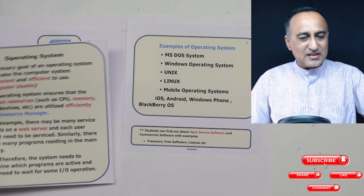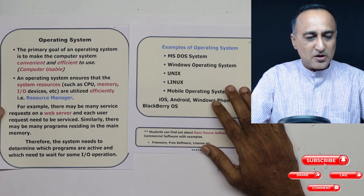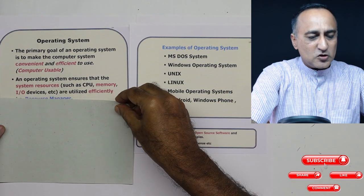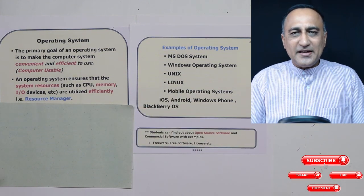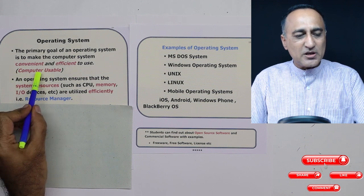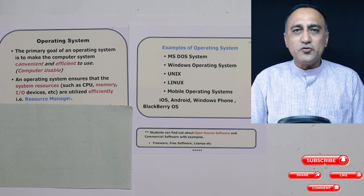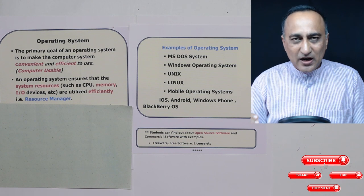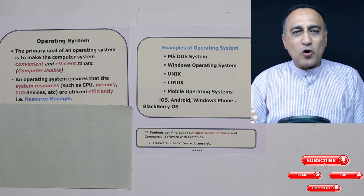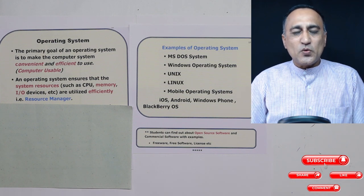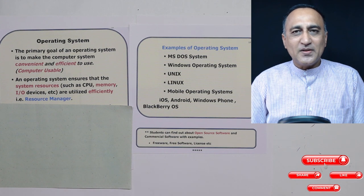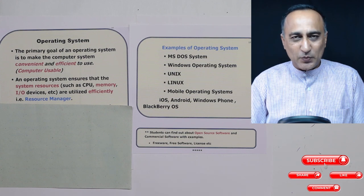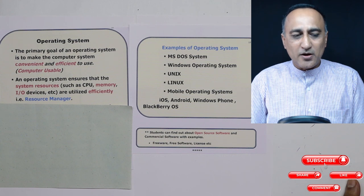Now let's discuss operating system concepts. What is actually the job of an operating system? The job is essentially just two things: to make the computer usable by making it convenient and efficient for a user, by providing a medium of communication between the user and the hardware. To talk to the hardware, the operating system is in between. So when you're working on your Windows PC or your Android phone, it is the Android or Windows OS which is actually talking to the hardware — you are not directly talking to the hardware.